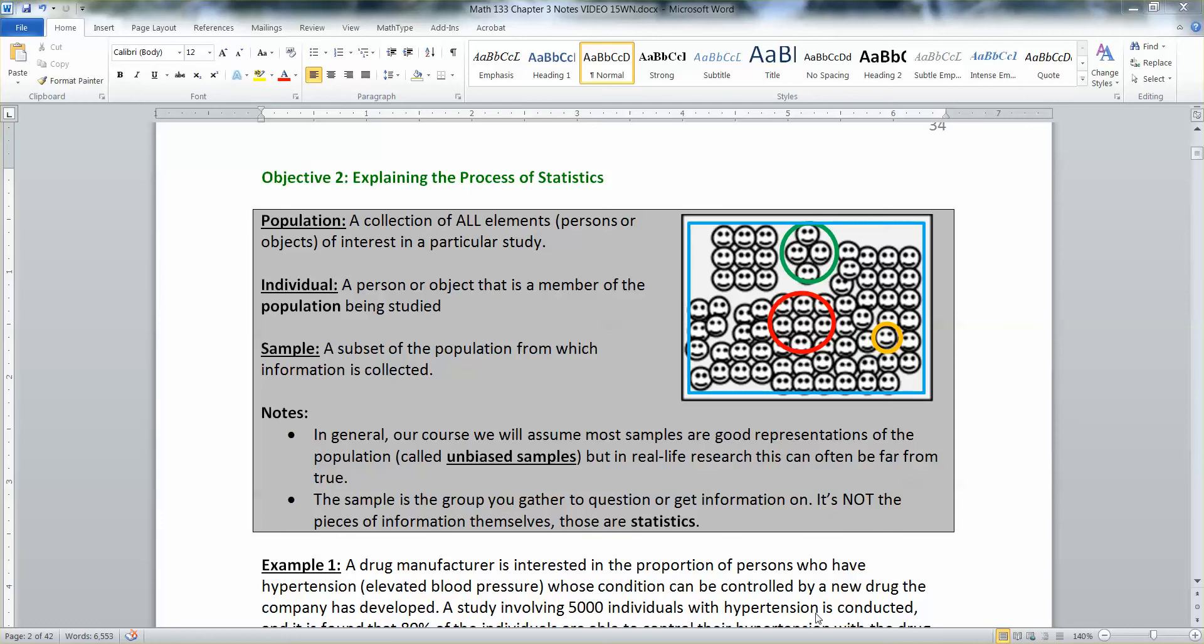When we take statistics, we're taking them from a population. A population is a collection of all the elements, persons or objects of interest in the study. So it can be people, but it could also be snowflakes, tires, tigers, animals, it doesn't matter. An individual is anybody that is a member of that population, somebody that could have been selected. A sample is any subset of the population. Subset means that it's less than or equal to the population. Technically it could be the whole population, but we don't think of it that way. We think of it as a smaller group than the population.